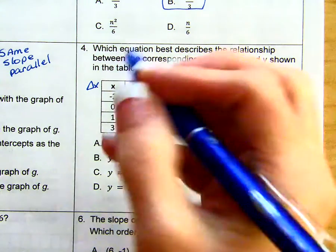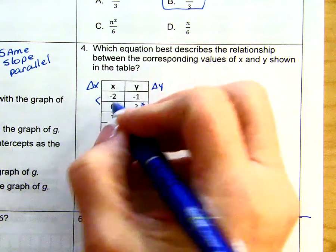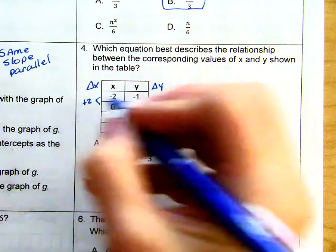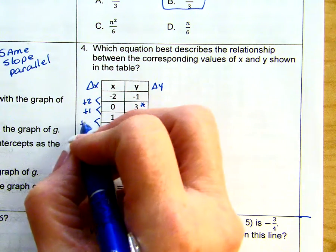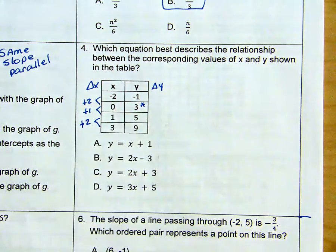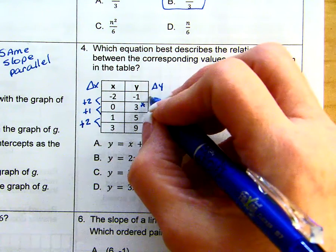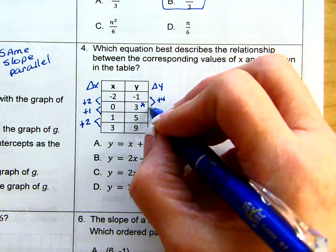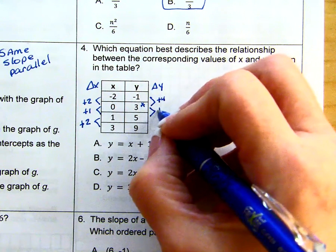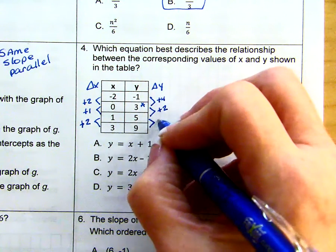So if we look at our change in x, to get from negative 2 to 0, we would add 2. To get from 0 to 1, we would add 1. To get from 1 to 3, we would add 2. For our change in y, to get from negative 1 to 3, we would add 4. To get from 3 to 5, we would add 2. To get from 5 to 9, we would add 4.